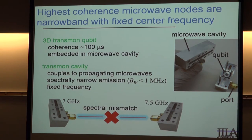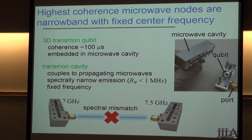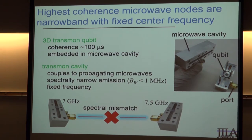The most coherent version of these qubits and quantum systems are completely fixed-frequency objects. The qubits cannot be tuned in frequency, and the cavities — in order to build the most coherent version — also cannot. That means you have an object with spectrally narrow emission at some fixed frequency in the microwave domain. Our cavities are made by humans, not by God, so they might intentionally or accidentally be at different frequencies, giving us a spectral mismatch we need to overcome.